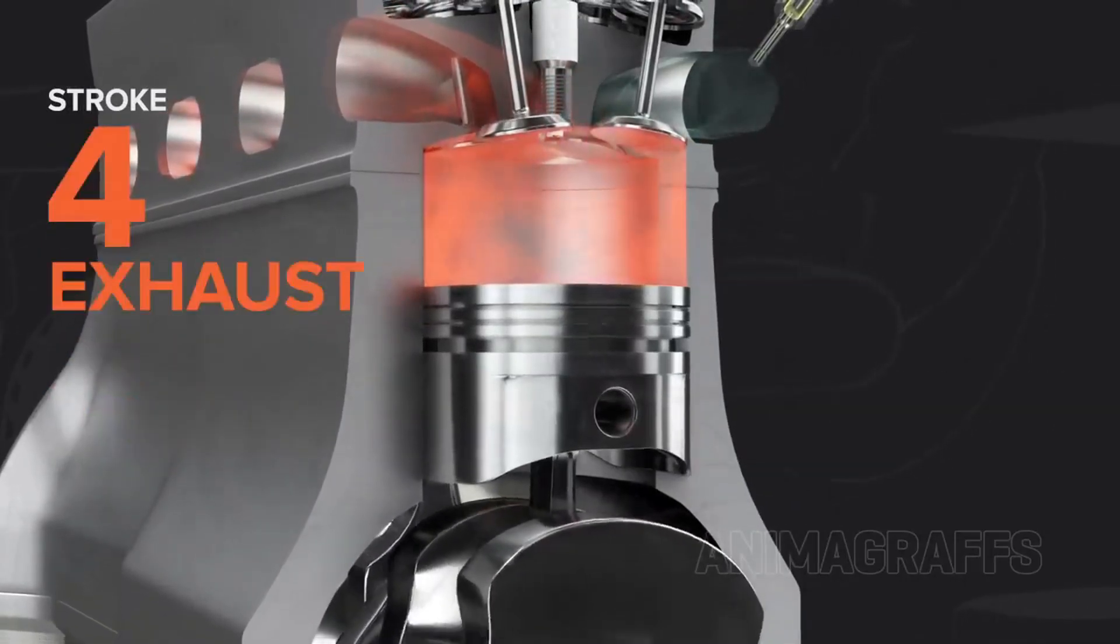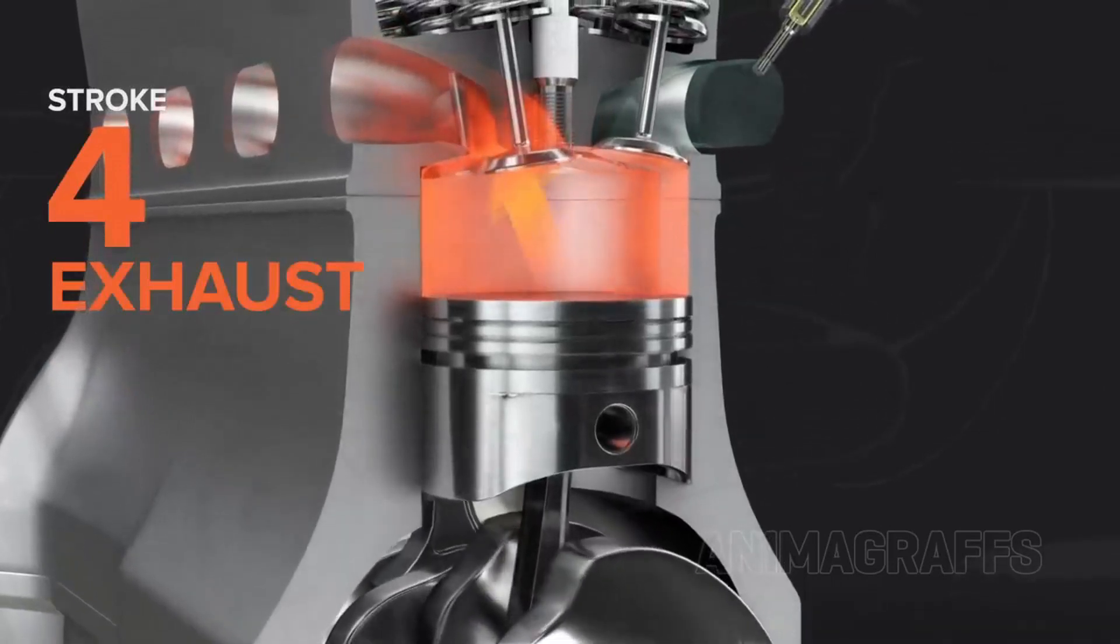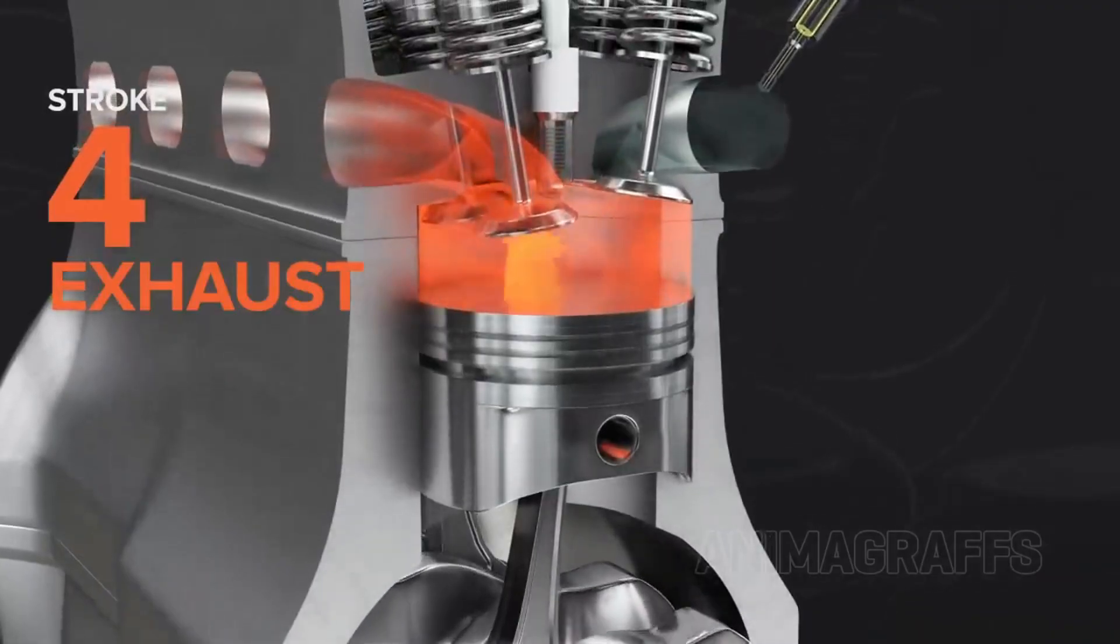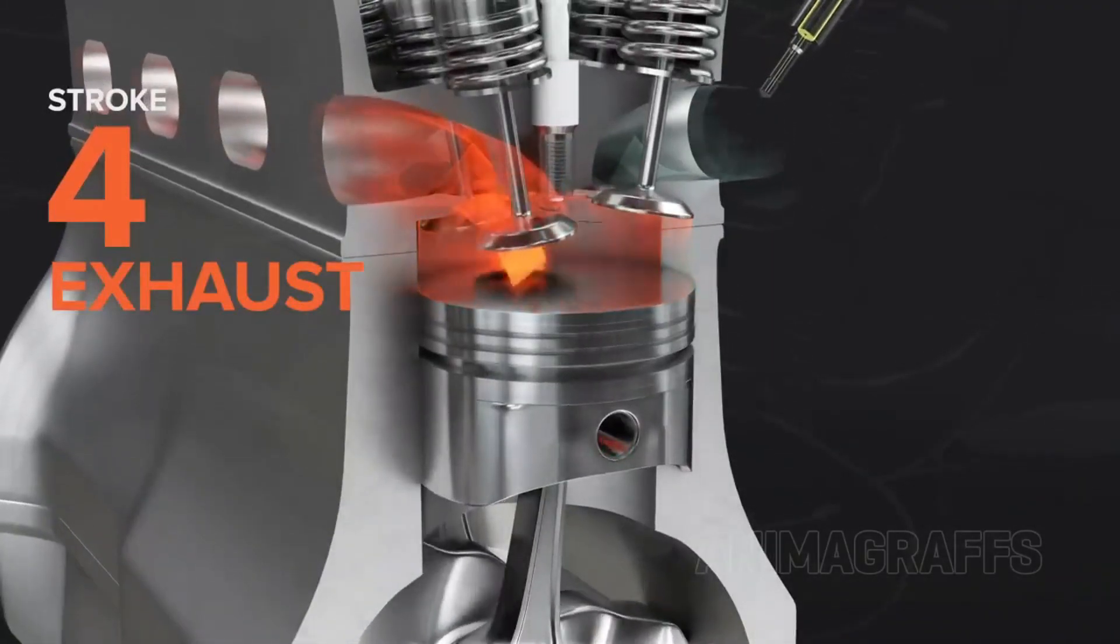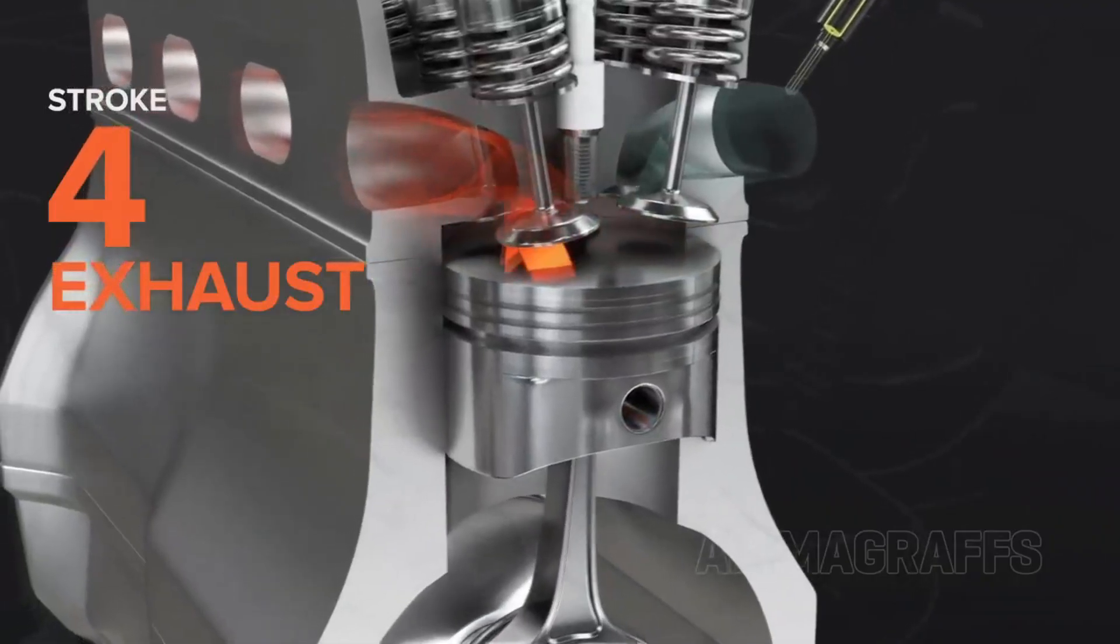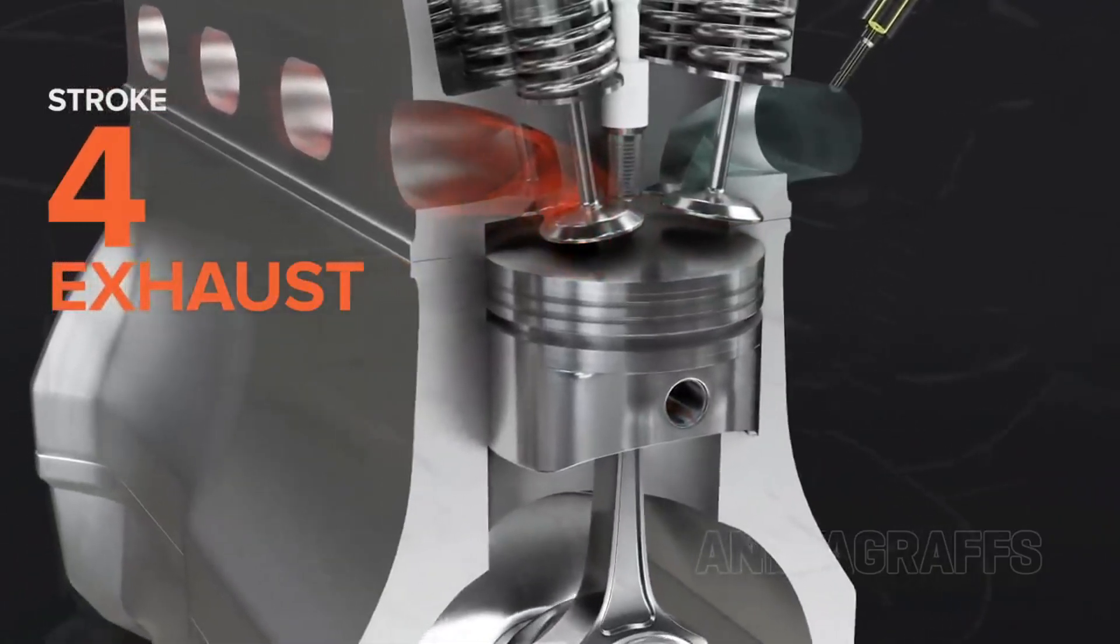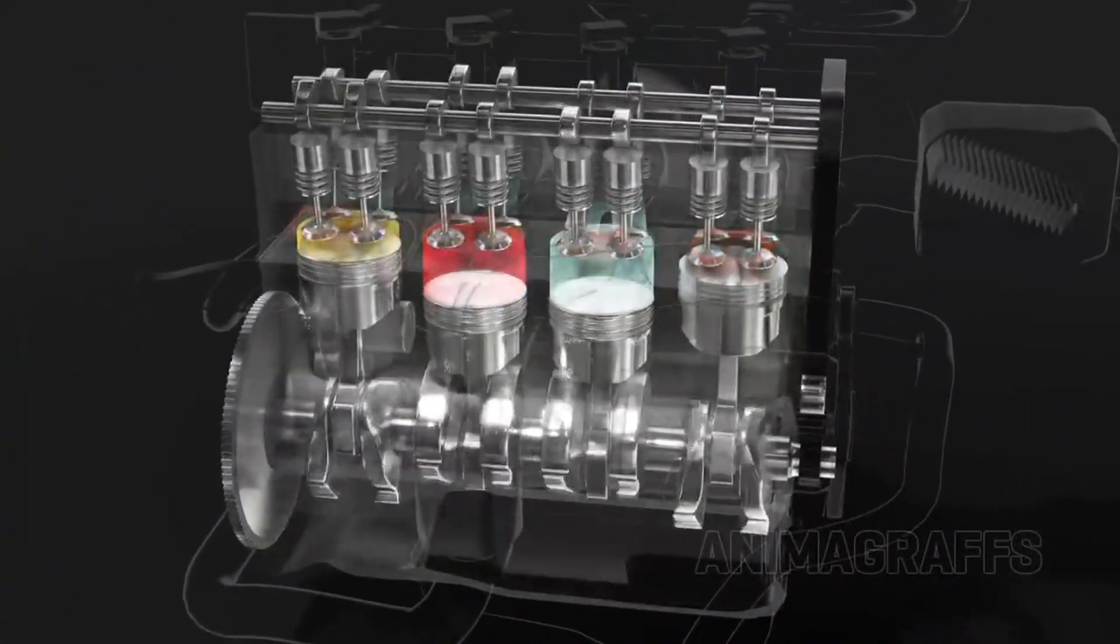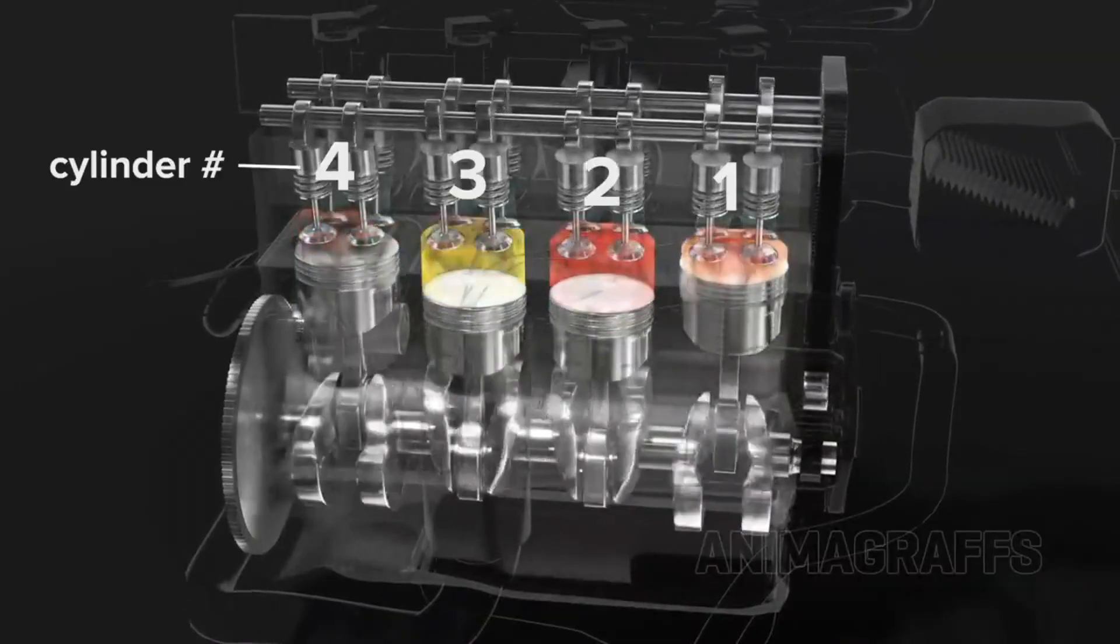Four, exhaust stroke. Time to exhale. After the power stroke, the exhaust valve opens and the piston moves back up, pushing burnt gases out of the cylinder through the exhaust system. Just like a marathon runner, the engine exhales the waste and prepares for another breath. And then, the cycle repeats, over thousands of times per minute, in a single cylinder.